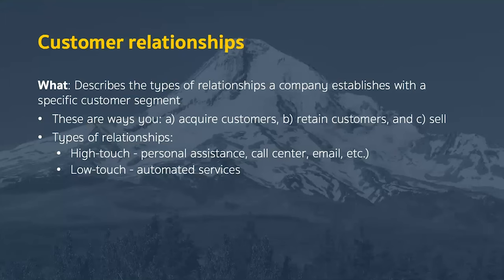The customer relationships building block focuses on the types of relationships you want to establish with your specific customer segments — generally the ways you're looking to acquire customers, retain customers, or sell to them. Relationships can be either high touch or low touch. In a high touch relationship, you might have a personal assistant, a call center, or respond to inquiries via email. In a low touch model, you could have a chatbot on your website or offer automated checkout.